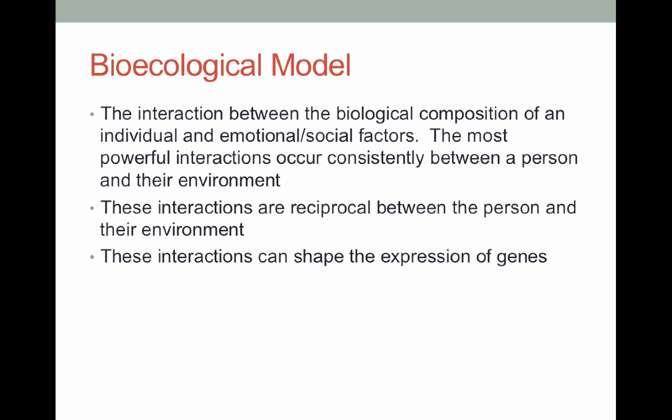The bioecological model is also the creation of Uri Bronfenbrenner, and it talks about the interaction between the biological composition of a person and the emotional and social factors. The most powerful interactions occur consistently between a person and their environment. An important proposition is that these interactions are reciprocal — between the person and their environment — and that these interactions can shape the expressions of different genetic material. The important presumption of this model is that the individual and their biological makeup is actually interacting with and influencing the social environment, as well as the other way around.